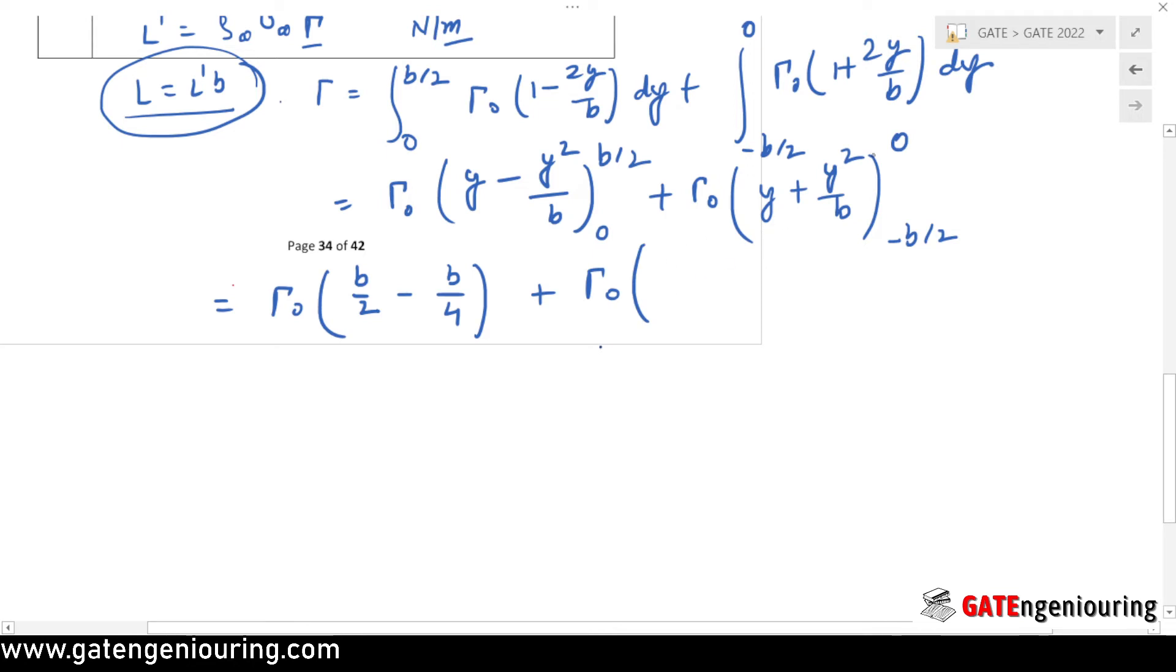Again, the upper limit is 0, and this is also 0. Minus minus of b/2, so replace y with minus b/2, and the square of minus b/2 is b²/4, so that gives this as b/4.